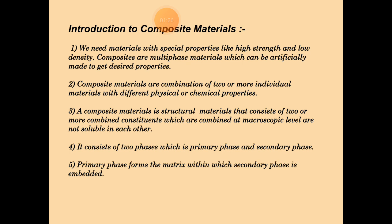This means there are combinations of two or more than two materials which have different chemical properties and also physical properties. A composite material is a structural material that consists of two or more combined constituents which are combined at microscopic level and are not soluble in each other.